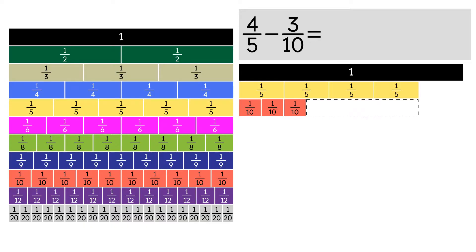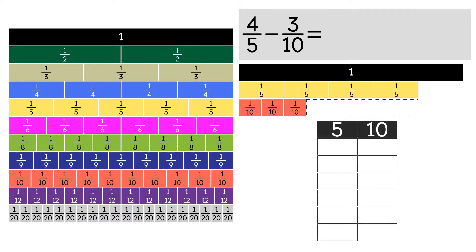To find the like denominator, we need to find the common multiple. First, let's list the multiples of 5: 5, 10, 15. Now let's list the multiples of 10 until we have a common multiple with 5: 10. As you can see, 10 is the common multiple between 5 and 10.